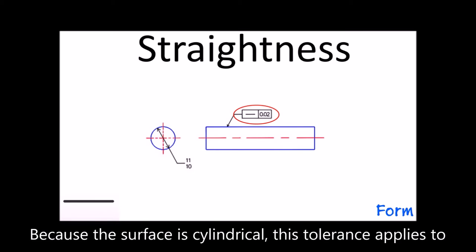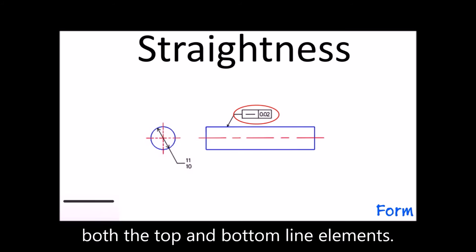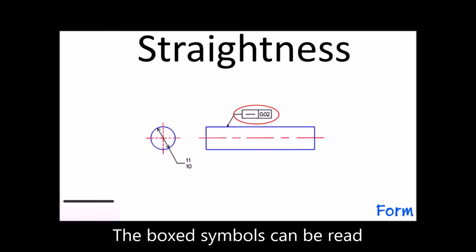Because the surface is cylindrical, its tolerance applies to both the top and the bottom line elements. The boxed symbol can be read.